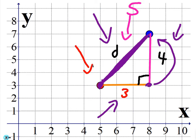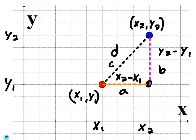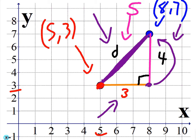Both examples have points. That first point is (5, 3) — here's the X value, here's the Y value. The second point is (8, 7). If we want the horizontal distance, we do X2 minus X1, which is 8 minus 5, giving us 3. For the vertical distance, we take Y2 minus Y1, which is 7 minus 3, giving us 4.